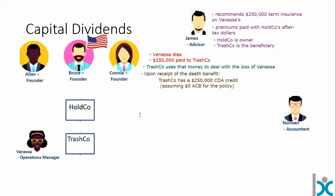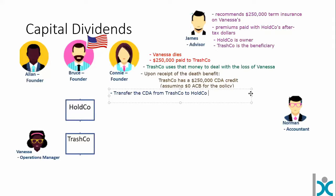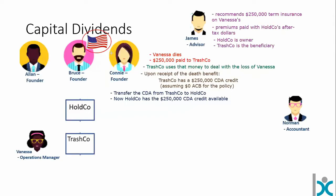TrashCo can't really use the CDA credit — it doesn't have personal shareholders. We consult with Norman, who says it's pretty easy: we're just going to transfer the CDA credit from TrashCo to HoldCo. Now HoldCo has that $250,000 CDA credit available. Here's a little twist: just for this presentation, Bruce is an American — a U.S. person for tax purposes — and this creates some complexity.